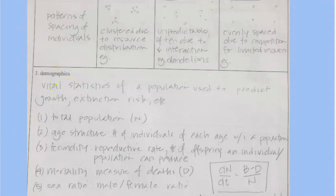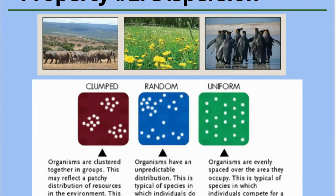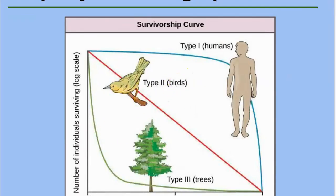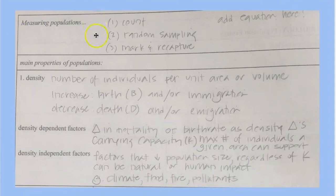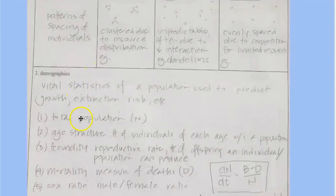And demographics just refer to vital statistics. And there are things like vital statistics are things like how many total are in the population. And we talked a little bit a second ago about how you might measure a total.